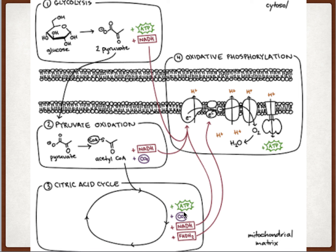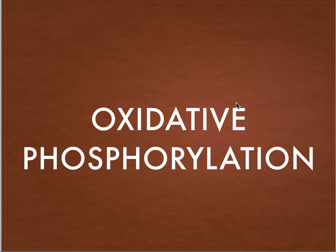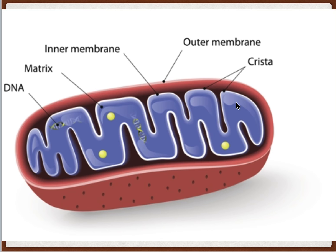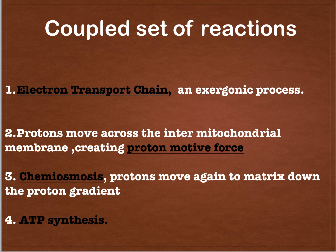However, much more ATP is released on oxidation of these coenzymes NADH and FADH2 when they enter into the process of oxidative phosphorylation. Oxidative phosphorylation is the terminal process of cellular respiration and it's a vital part of metabolism taking place on the inner membrane of mitochondria, accounting for very high ATP yield. Oxidative phosphorylation is a set of coupled reactions, and the first reaction is the electron transport chain, which is an exergonic process that releases energy as electrons are transferred across the chain.